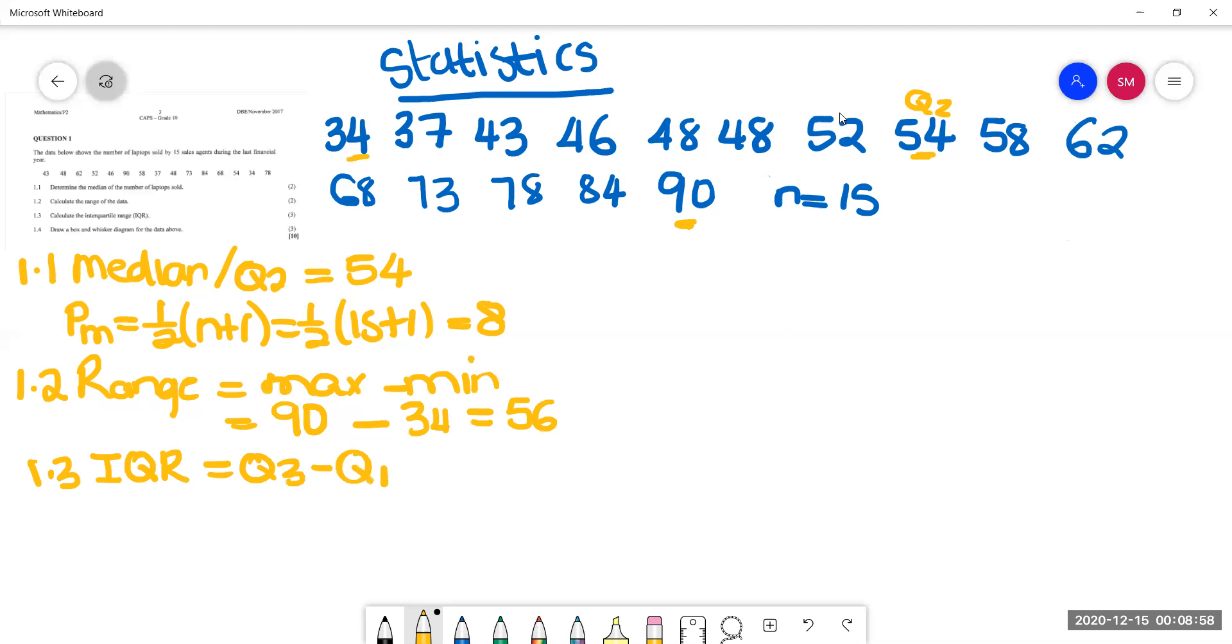So the position of Q3 is at 75% of the data set. That gives us 3 over 4, 15 plus 1 equals 12. So this was 8, 9, 10, 11, 12. So Q3 is 73.